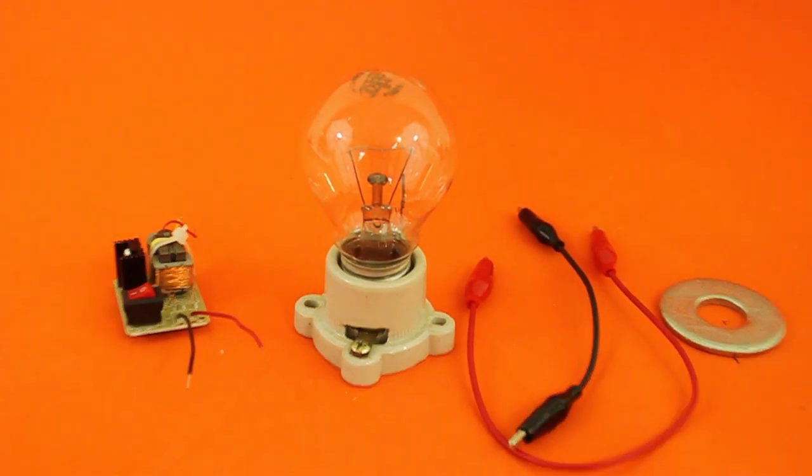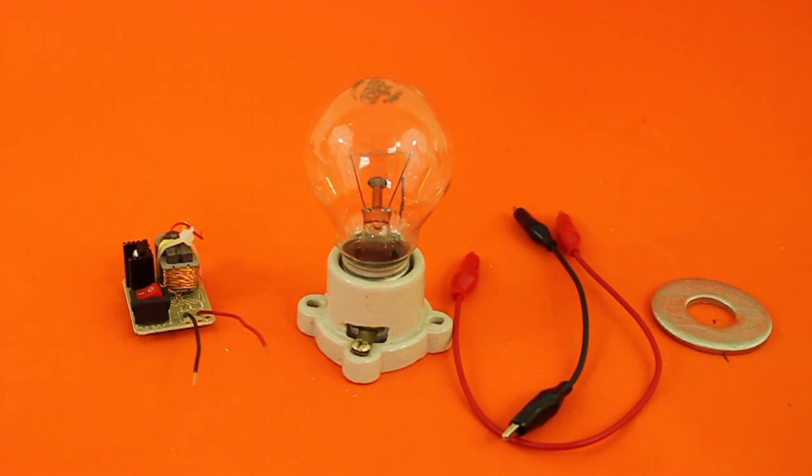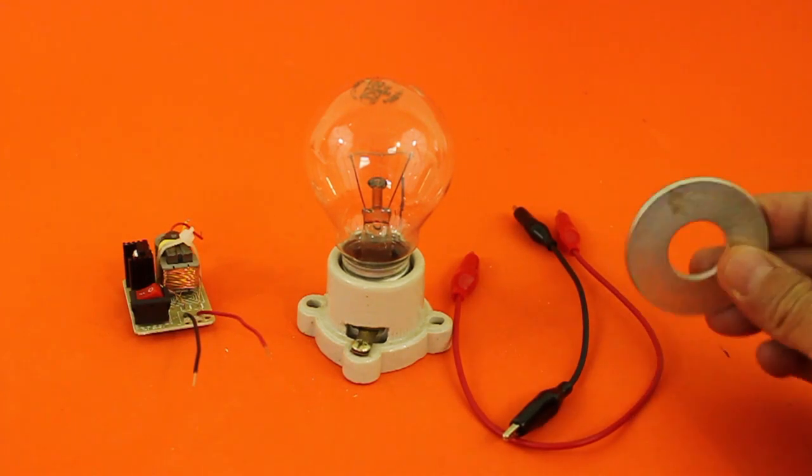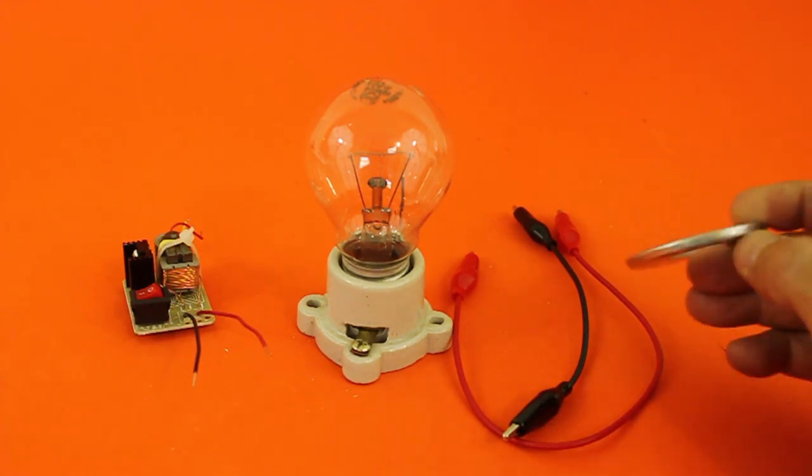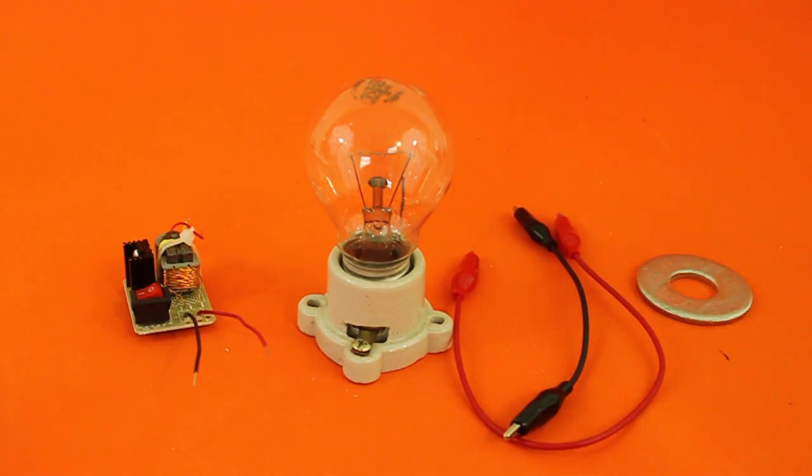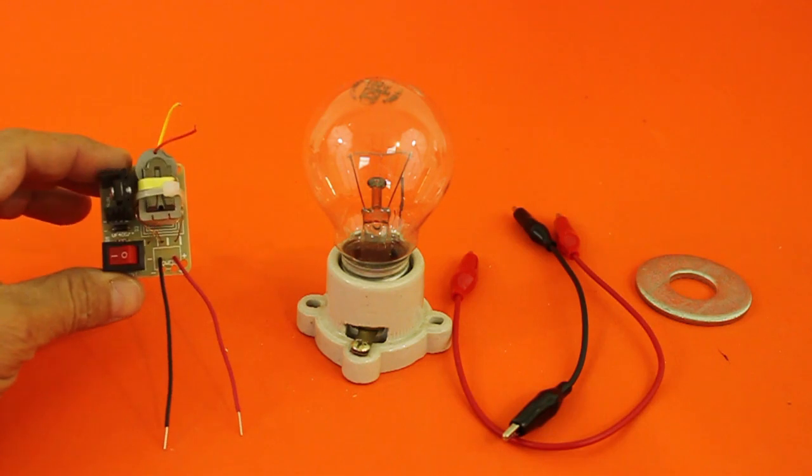You also need a couple of connecting wires, alligator clips, and finally a large metal washer. It is better if it is large and heavy. And of course you need a battery or power supply, 3.7 volts, in order to run the small high voltage power supply.